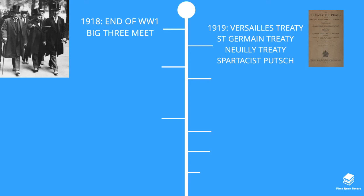Germany still retained its major territories but had to give up others. Other treaties included the Saint-Germain Treaty, which impacted Austria and Hungary — prior to this it was the Austro-Hungarian Empire, but this empire was dismantled and countries formed as a result included Czechoslovakia, Yugoslavia and Romania.